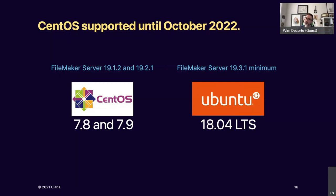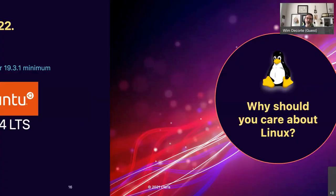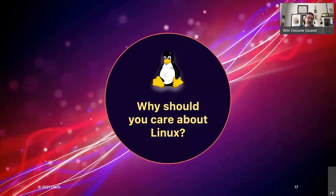Although they are not the most recent versions, they are not old either. Ubuntu 18.04's most recent release dates back to August 2020 and will receive updates until 2023. CentOS 7 will get maintenance updates all the way to mid-2024. They're stable, conservative, and that's exactly what we want in a server operating system. So why would you care about having a FileMaker Server that runs on Linux?